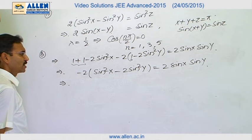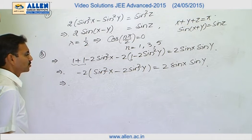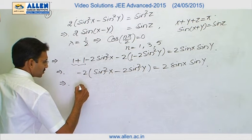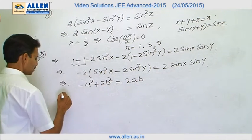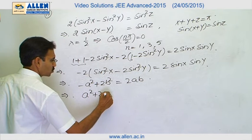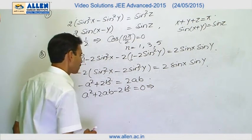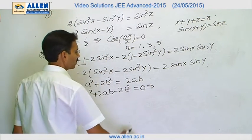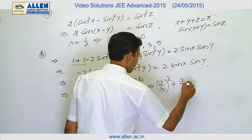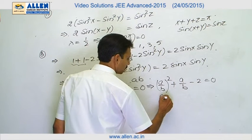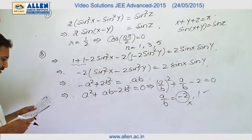Dividing by 2 on both sides and then using the sine rule — a/sin A = b/sin B = c/sin C = 2R — I can write the relation as minus a² plus 2b² equals 2ab. This is a quadratic in a: a² plus 2ab minus 2b² equals 0, divided by b². The quadratic becomes (a/b)² plus (a/b) minus 2 equals 0. There are only two values of a/b: minus 2 and 1. Minus 2 is obviously rejected, so 1 is the only value. For part B, the right option is p.